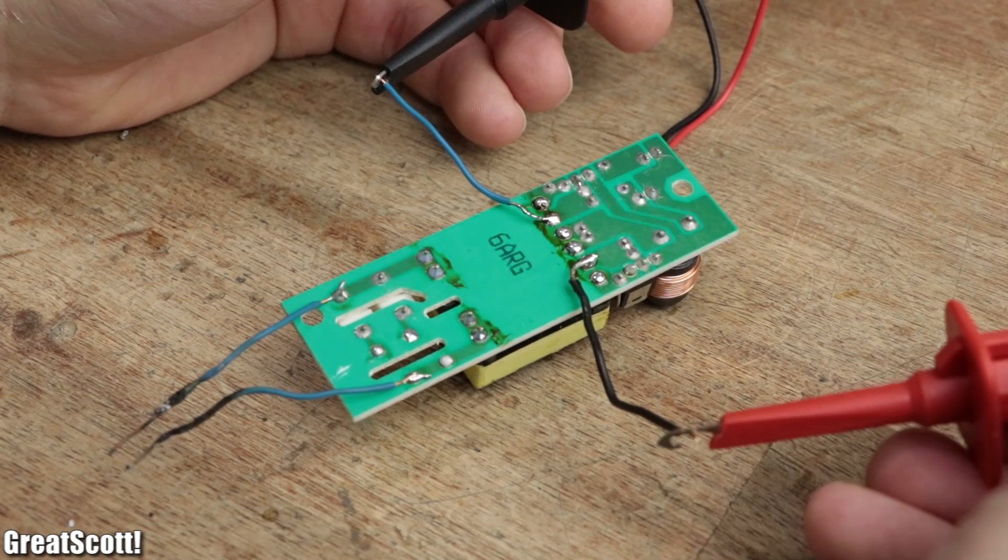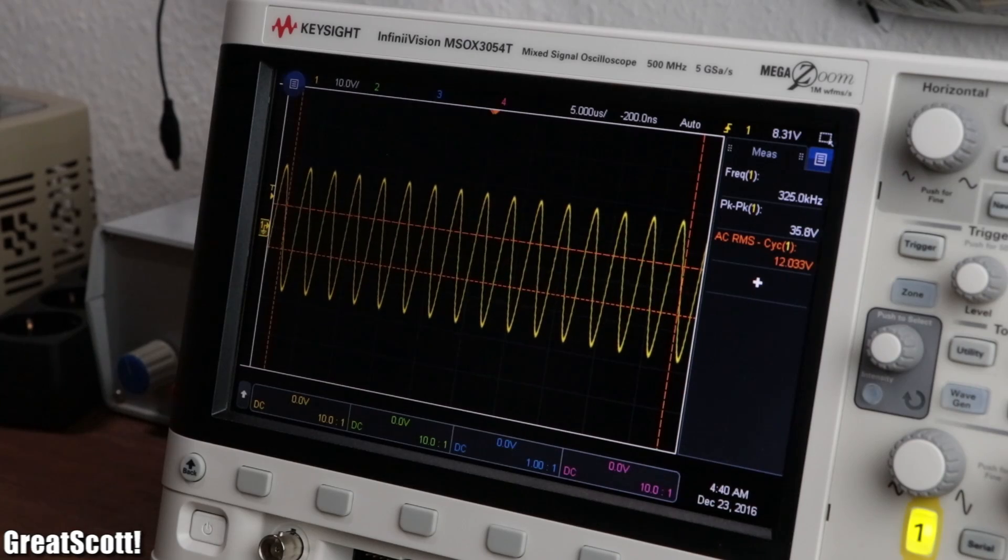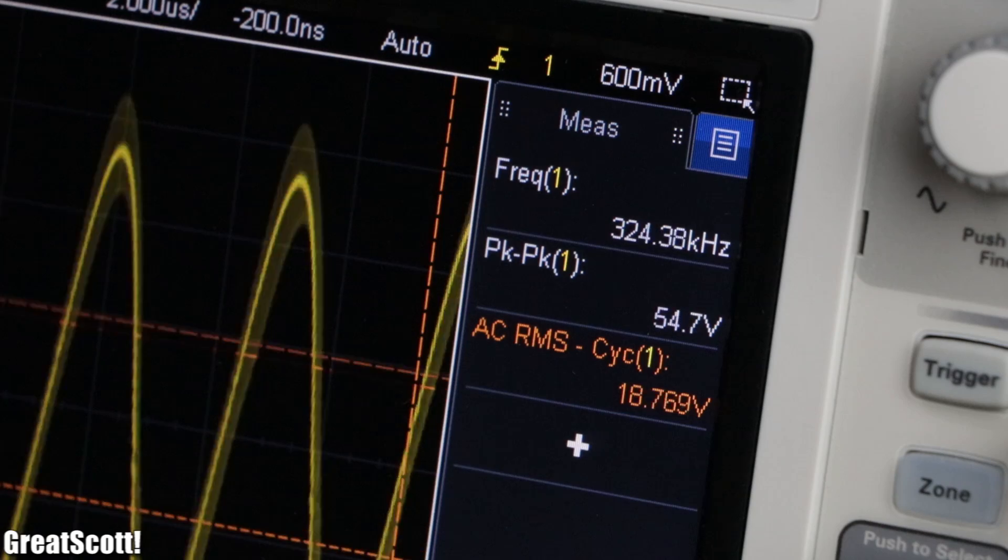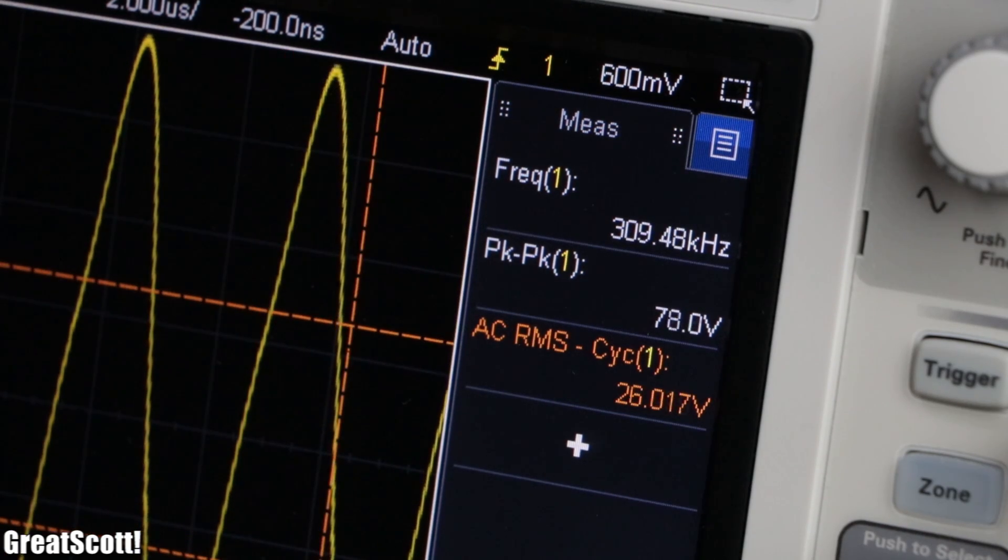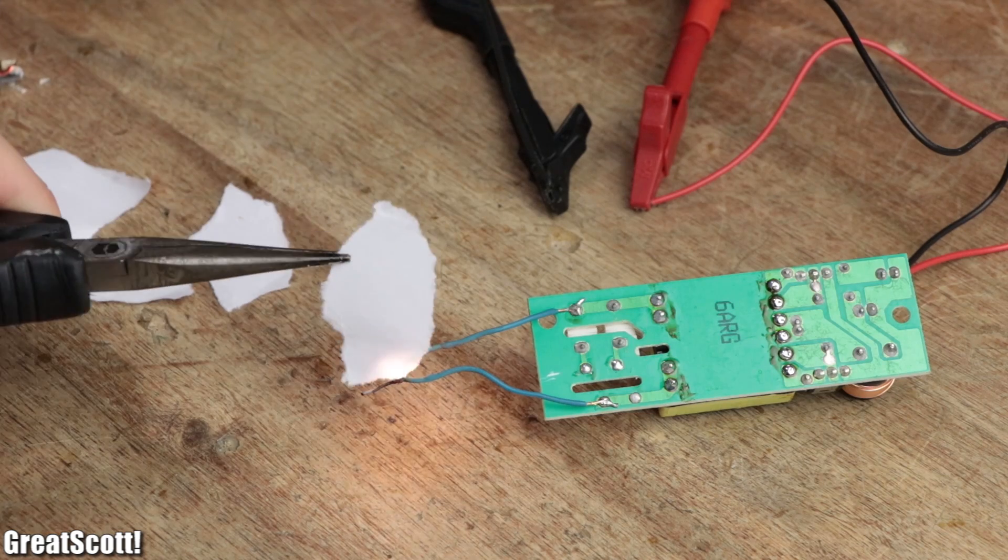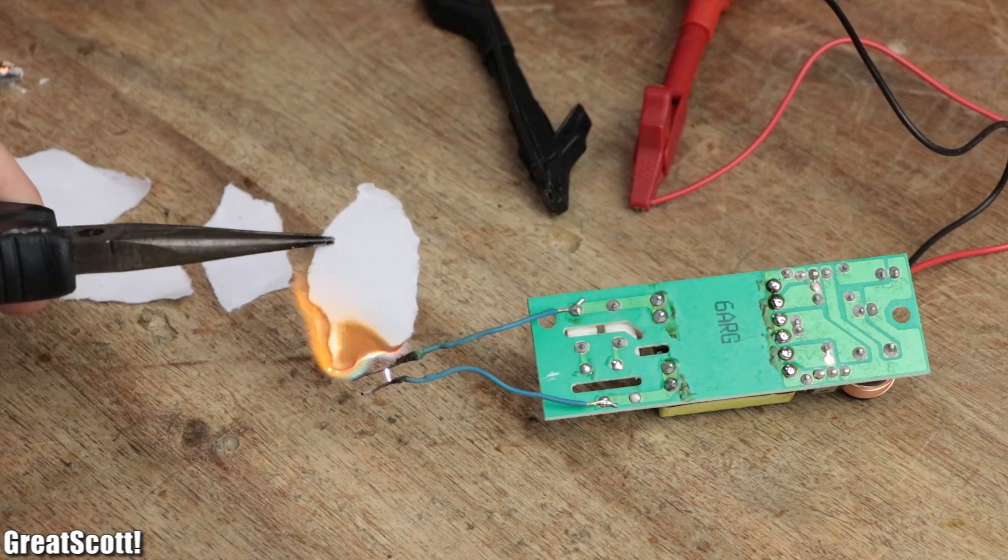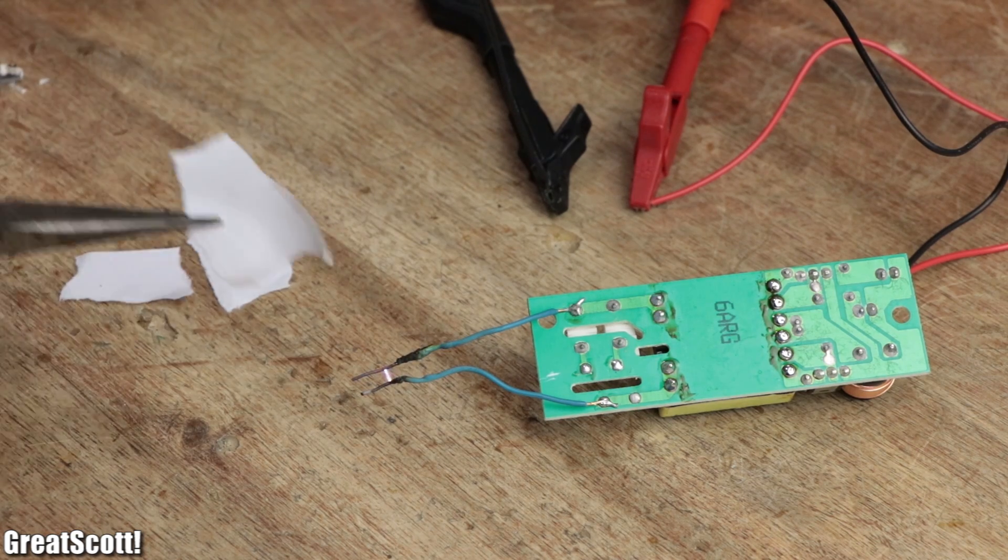And if we check the voltage on the primary coil we can still see the beautiful sine wave, just with a higher frequency because of the lower inductance. But needless to say this circuit is only a prototype and not really a proper arc lighter yet.